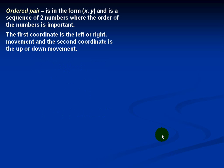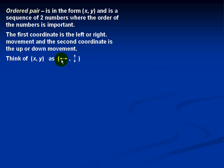The first coordinate is the left or right movement and the second coordinate is the up or down movement. When you think of an ordered pair X, Y, think of the first coordinate as the left or right movement and the second coordinate as the up and down movement.